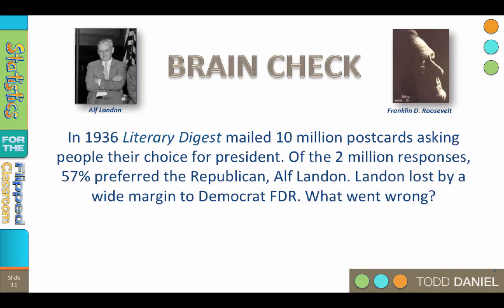Here is another famous illustration of sampling error. In 1936, the magazine Literary Digest, which had a long track record of picking presidential winners, mailed 10 million postcards asking people their choice for president. Of the 2 million responses, 57 percent preferred the Republican, Alf Landon. However, Landon lost by a wide margin to Democrat Franklin D. Roosevelt. So what went wrong?